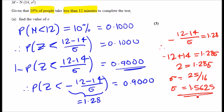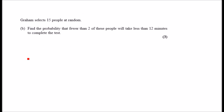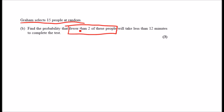Part B: Graham selects 15 people at random. Find the probability that fewer than two of these people will take less than 12 minutes to complete the test. We have a new sample size of 15. This is binomial — not normal — because we're talking about people, which are strictly integer values; you can't have 2.5 people. So this is a binomial distribution with n = 15.